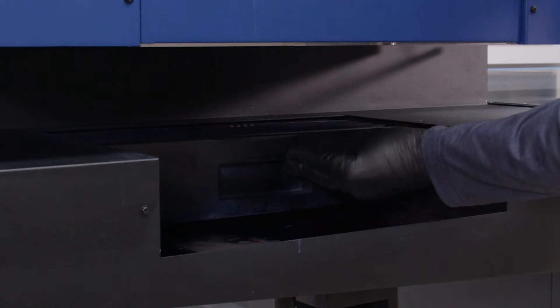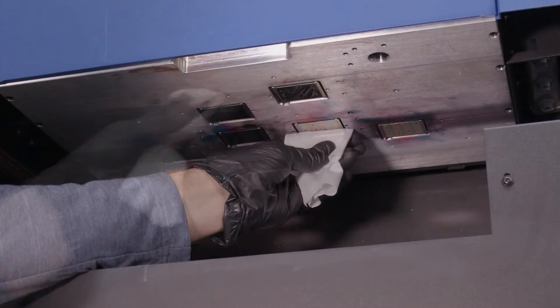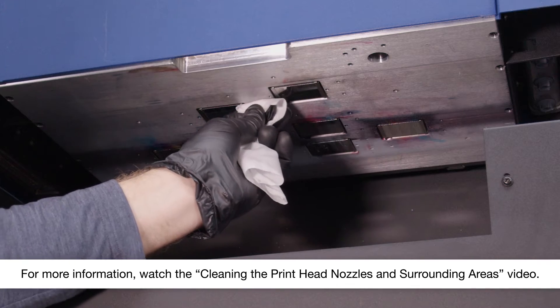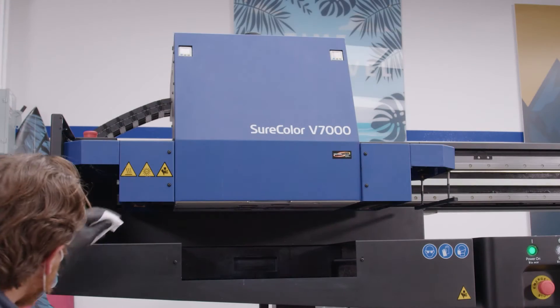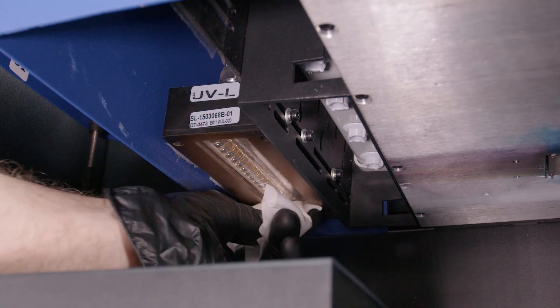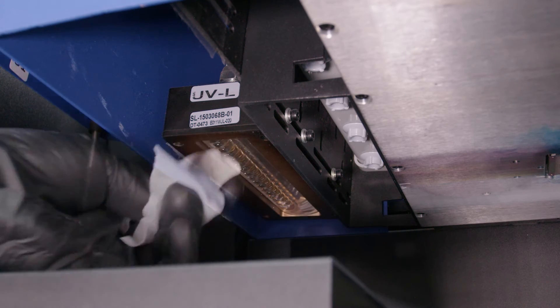Clean the UV lamps at the same time you clean the printhead nozzles and surrounding areas. Using a polyester or nylon cloth dampened with cleaning fluid, clean the UV lamps on both sides of the carriage.